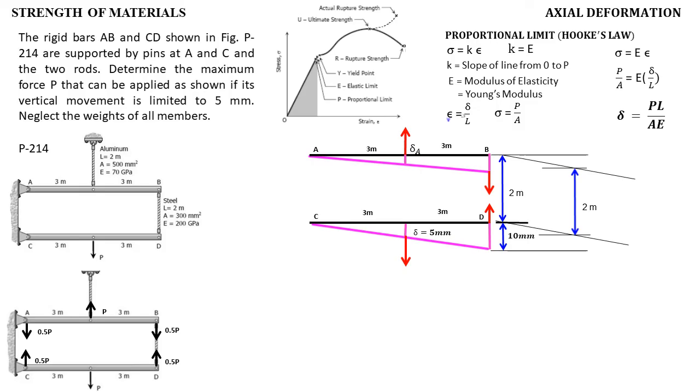From there, we can now say that this distance or deformation is due to the steel rod. And this deformation or movement is due to the deformation of the aluminum rod, and that is equal to twice the deformation here. Why twice? From the ratio and proportion of a triangle again, 3 is to the deformation, and 6 is to twice the deformation.